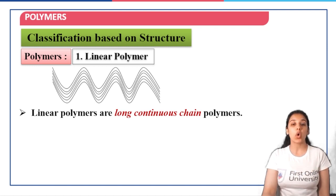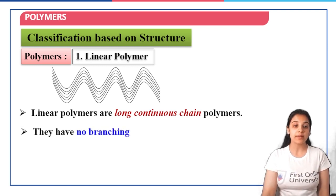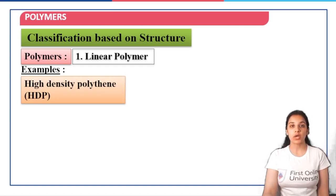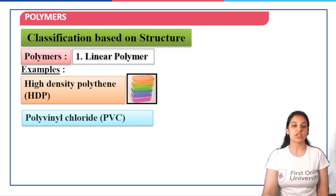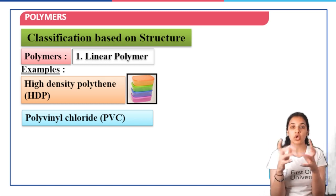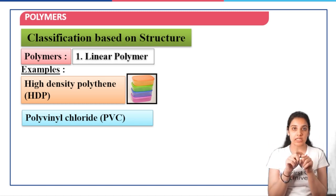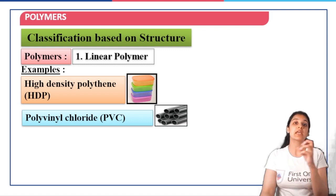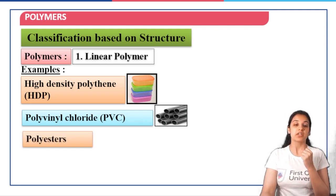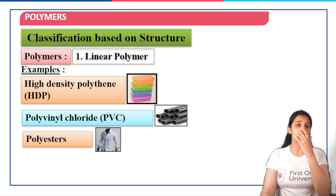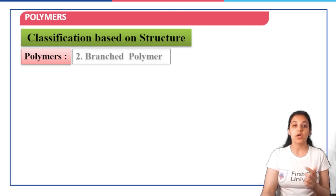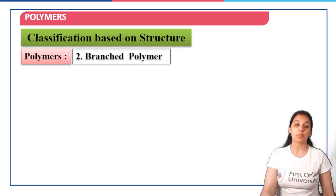Linear polymers are long continuous chain polymers — they have no branching. For example, high-density polythene (HDPE) is one such example which is used in making plastic boxes. Then PVC, polyvinyl chloride, which is used in making pipes — PVC pipes, you must have heard of. Then we have polyesters which are used in making clothes. Then nylon which is used in making ropes. All these are examples of linear polymers.